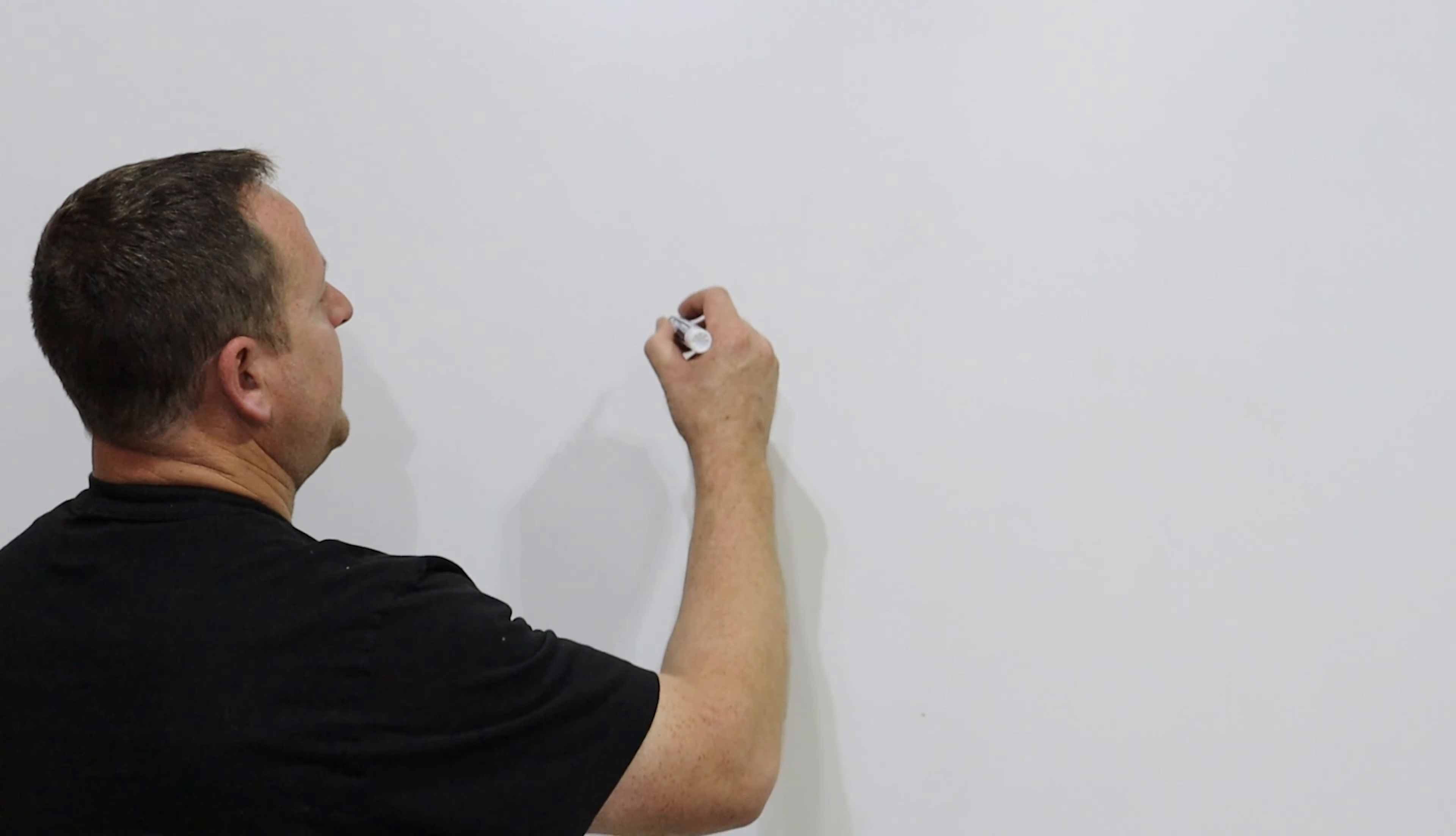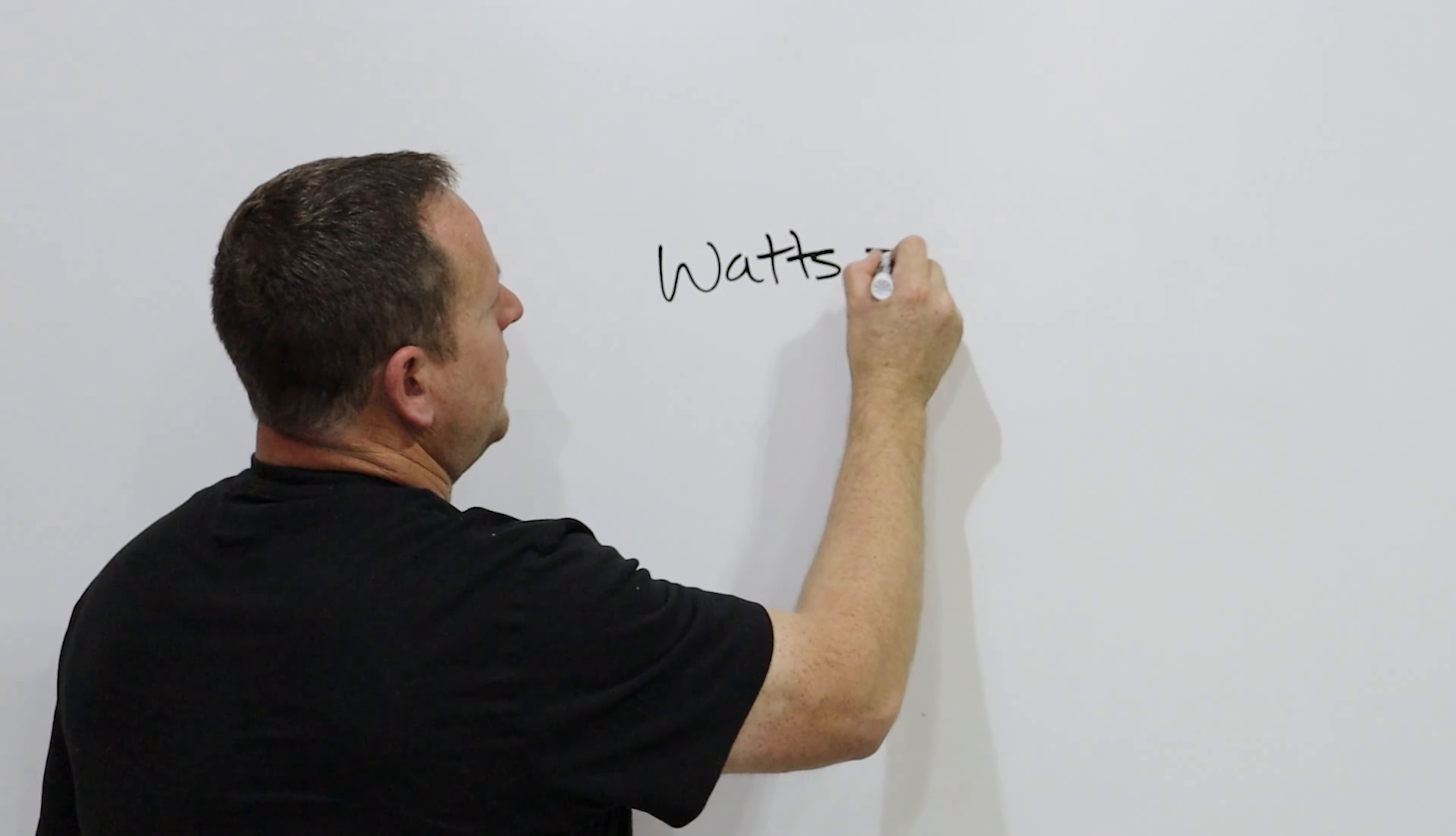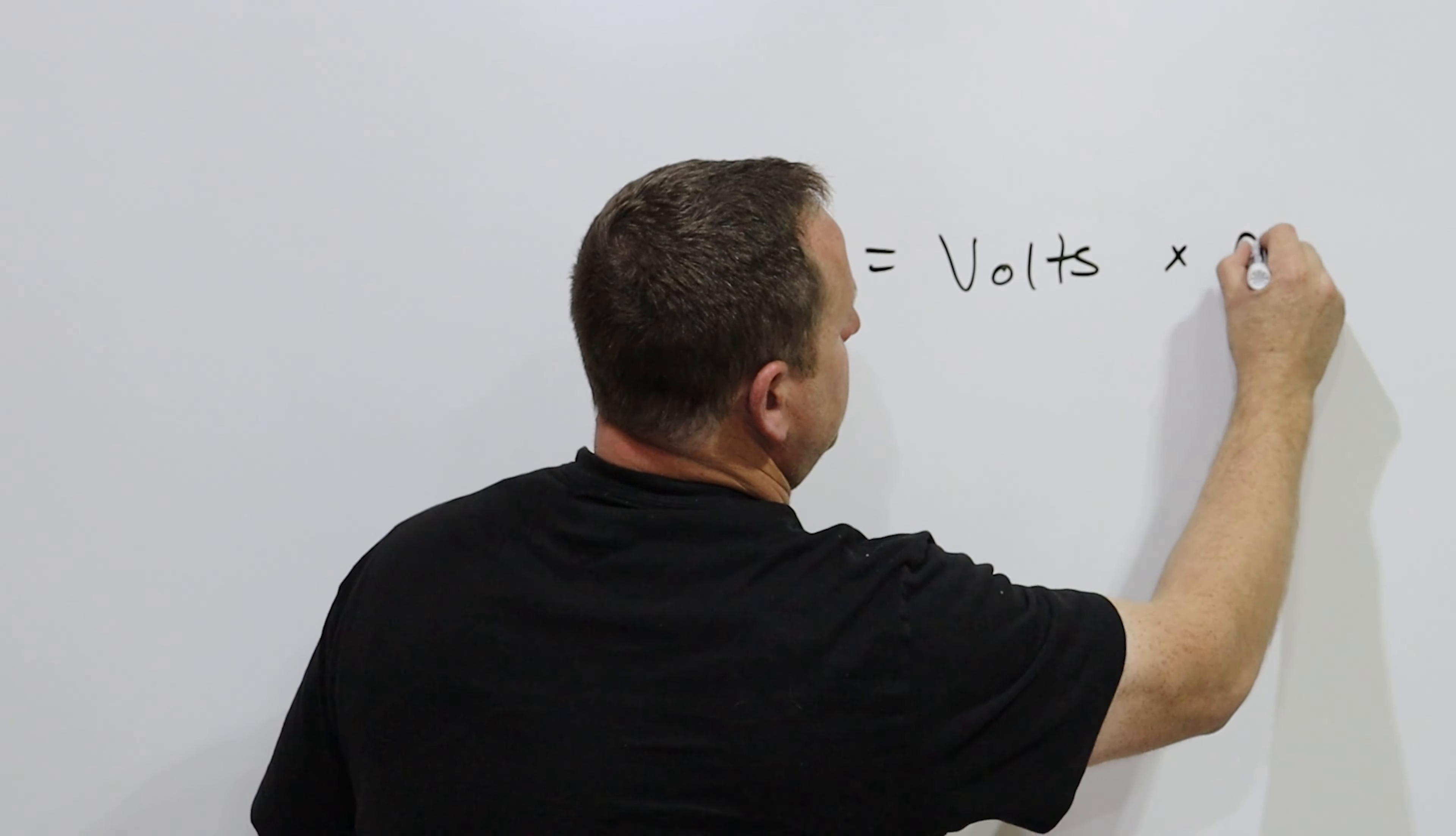When I'm installing circuits like in the garage, I'm thinking about what I'm going to be running. To determine how many outlets I should put on a circuit, I use a formula: watts equals volts times amps.